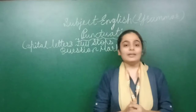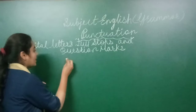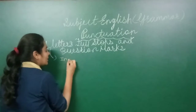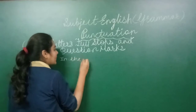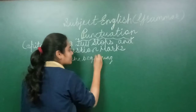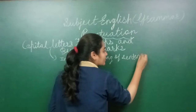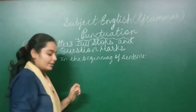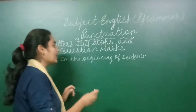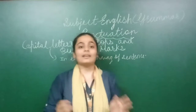First of all, we use a capital letter at the beginning of a sentence. And we also use a capital letter where the letter 'I' appears. We always write 'I' in capital.